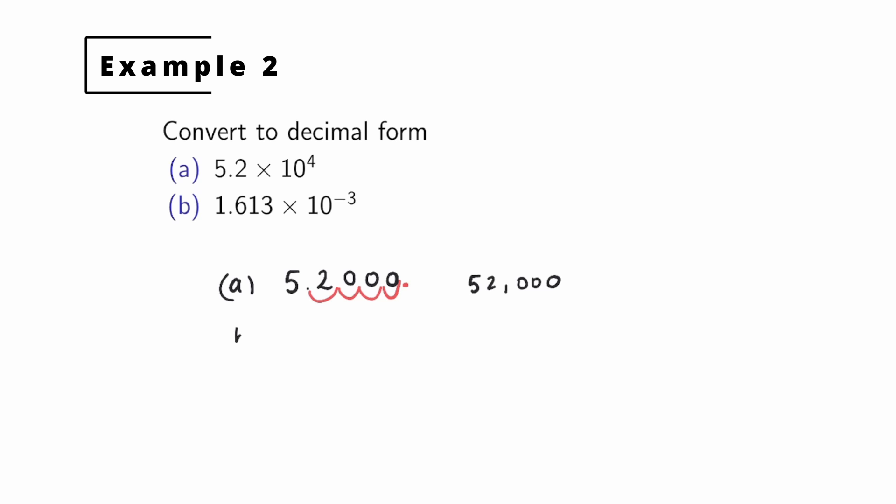Now for the second one, this negative 3 means that the decimal place has to move three places to the left. So we write 1, 6, 1, 3, and we move that decimal place 3 to the left: 1, 2, 3. That's where the decimal place goes now. We fill in our missing places with zeros, and so we get as our answer 0.001613.